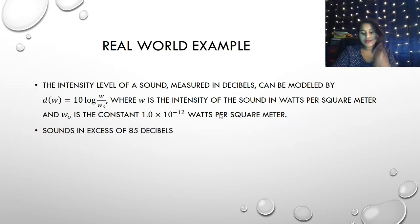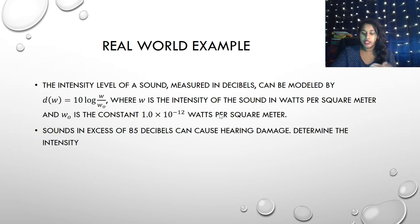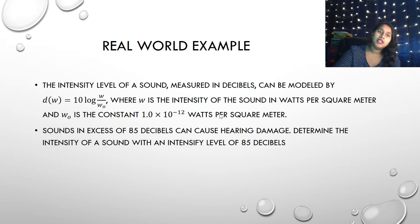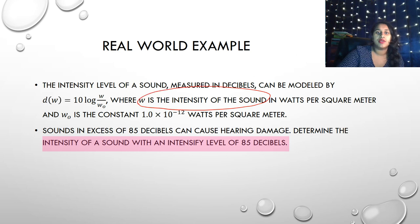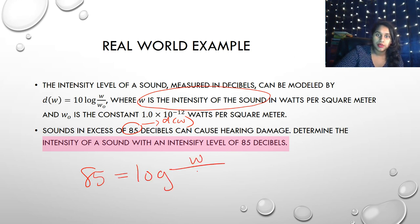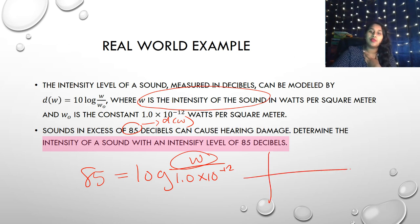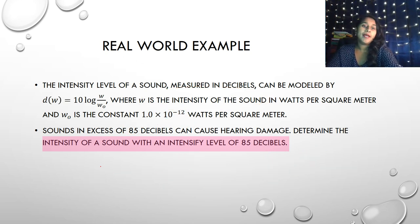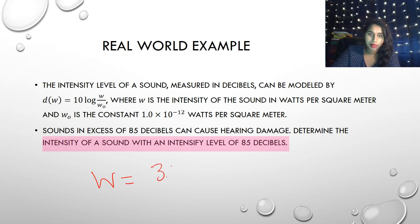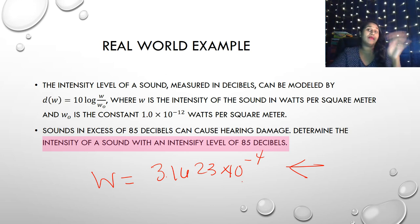Final question: sounds above 85 decibels can cause hearing damage — determine the intensity W of a sound at 85 decibels. Now we're solving for W, so 85 = 10 log(W / 1.0 × 10⁻¹²). Solving via calculator or graphing gives W approximately equal to 3.1623 × 10⁻⁴ watts per square meter. That is the intensity level at which hearing damage can occur.